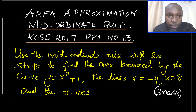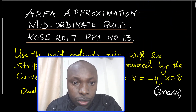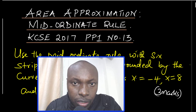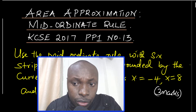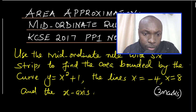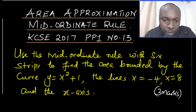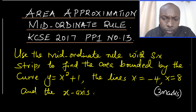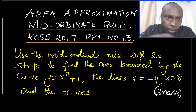Hello everyone, welcome to the lesson. In this lesson you're going to work out a question on area approximation using the mid-ordinate rule. We shall solve a question from the 2017 Paper 1 Mathematics, question number 13. The question reads: use the mid-ordinate rule with six strips to find the area bounded by the curve y = x² + 1, the lines x = -4, x = 8, and the x-axis.